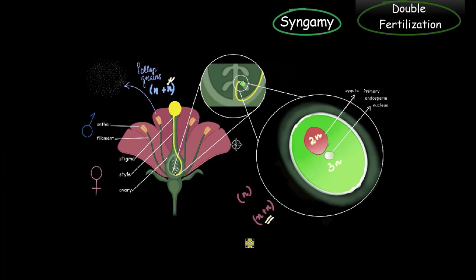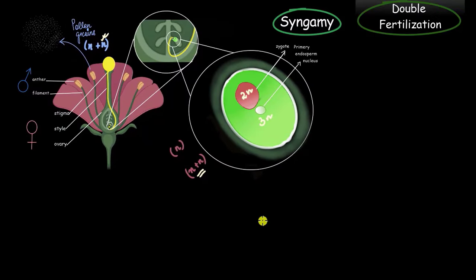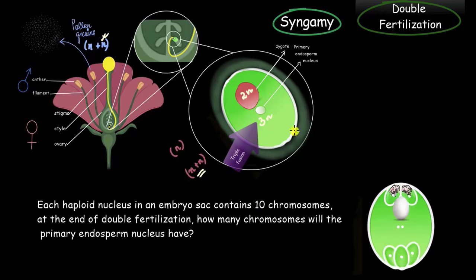Alright, now that we have seen how fusions of male and female gametes takes place, we know what is double fertilization and triple fusion. How about we try and solve a question related to it? So, the question is, if each haploid nucleus in an embryo sac contains 10 chromosomes, so this is an embryo sac and every nucleus has 10 chromosomes, then at the end of double fertilization, how many chromosomes will the primary endosperm nucleus have? So, this is the primary endosperm nucleus. What do you think? How many chromosomes will primary endosperm nucleus have at the end of double fertilization? Pause the video for a while and try to find out the answer.